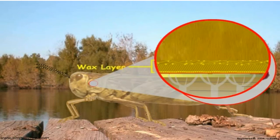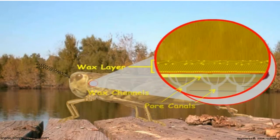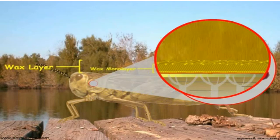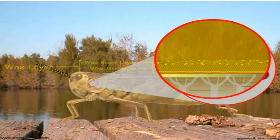A wax layer protects the insect from water loss. Pore canals may transport wax to the epicuticle, and wax channels at the ends of the pore canals deposit the wax onto the inner epicuticle. The wax consists of an inner monolayer of organized wax molecules and an outer bloom layer of randomly mixed fatty acids and fatty alcohols. Because insects are small animals, they have a large surface area relative to their volume, which means they have a potential for serious water loss through the cuticle, and the wax serves to suppress cuticle transpiration. The outermost cement layer is a product of the dermal glands and is comprised of lipids and tanned proteins. The cement layer is thought to protect the wax layer from abrasion, but it is variable and may not always be present.